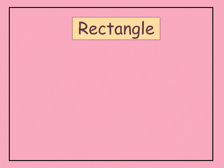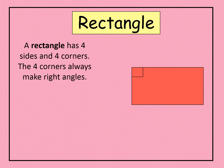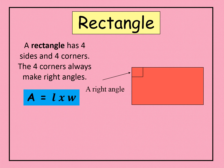After the square, let's have the rectangle. A rectangle has four sides and four corners, and the four corners always make right angles. The formula for the area of a rectangle is A equals L times W, where L means length and W means width.